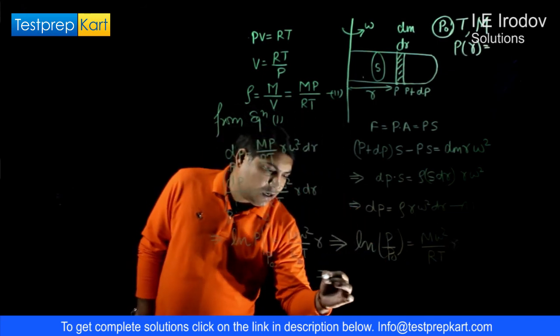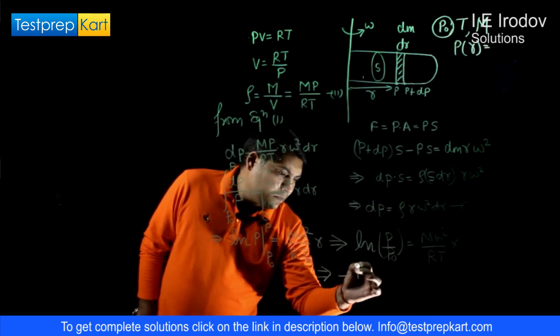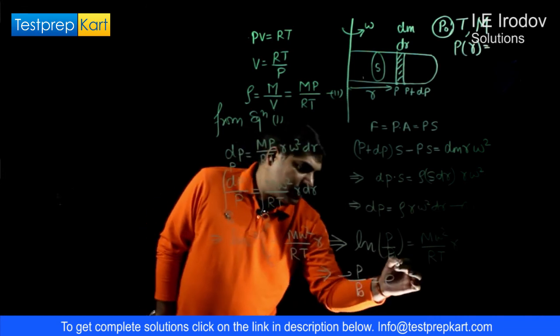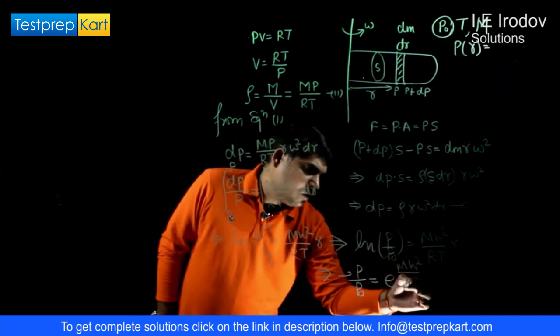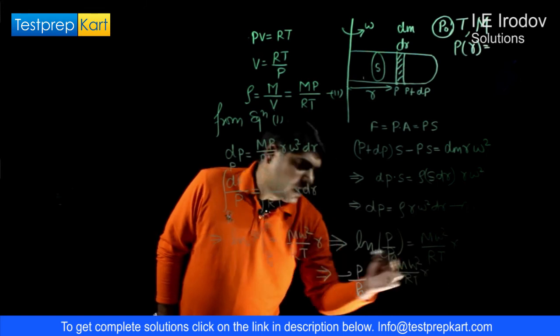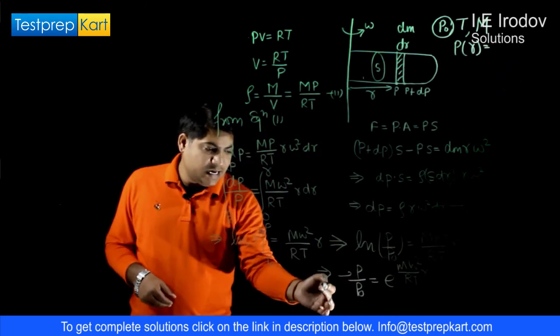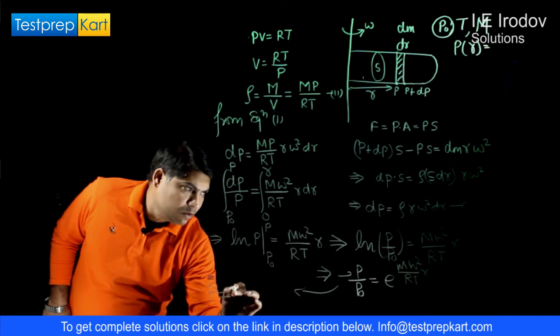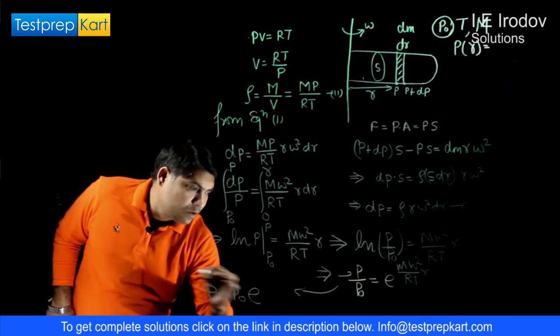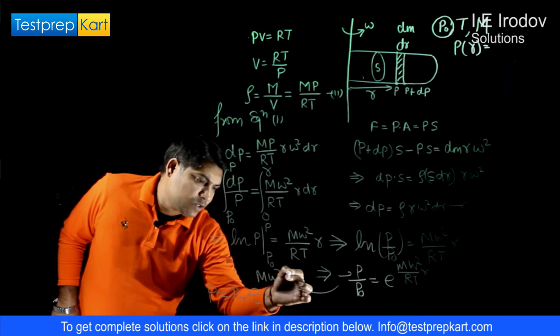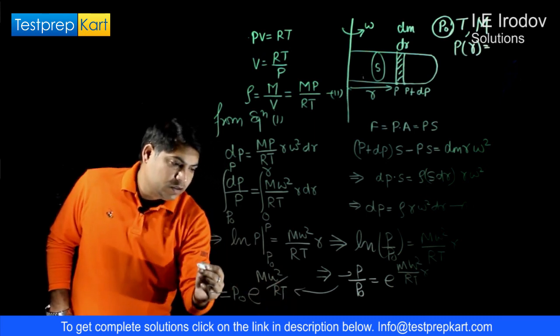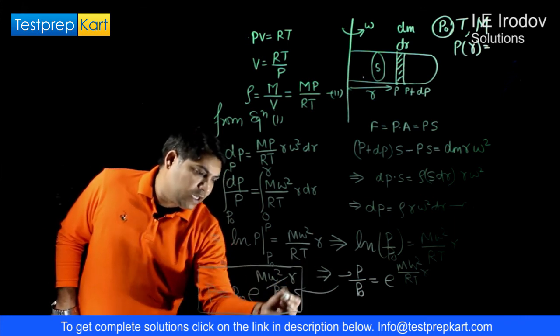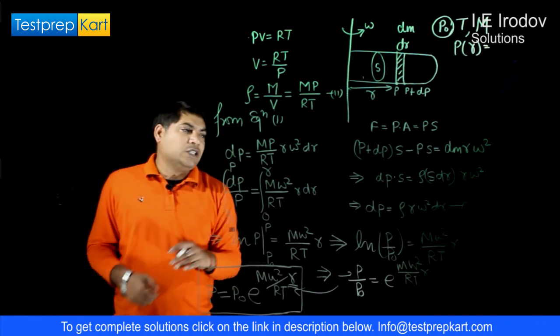We can remove this ln term, so P over P naught equals exponential M omega square over 2RT into R squared. From here we get the proper expression for pressure: P equals P naught into e to the power M omega square over 2RT into R squared. This is our final expression for how pressure is changing with distance R from the axis of rotation.